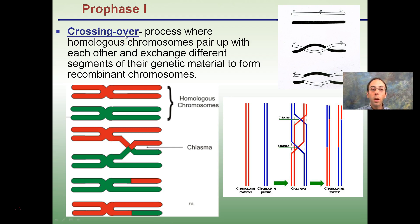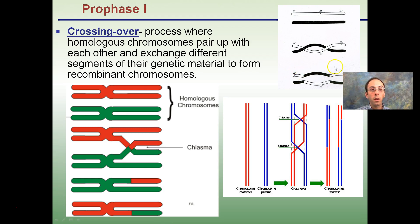Crossing over is a very important process in prophase I where homologous chromosomes pair up and exchange segments of genetic material to form recombinant chromosomes. Homologous chromosomes — one from mom, one from dad — line up next to one another. A section breaks off one chromosome and rejoins the other. Visualized as white and black chromosomes, after crossing over you get a striped appearance, showing that unique genetics have been joined together.